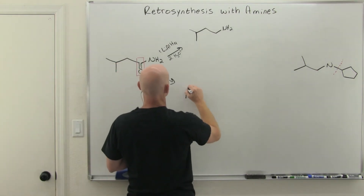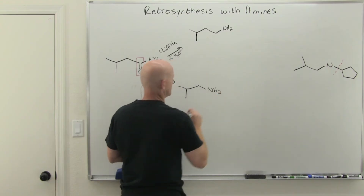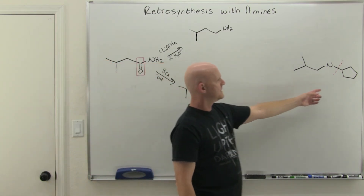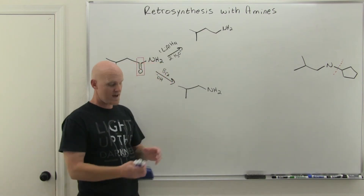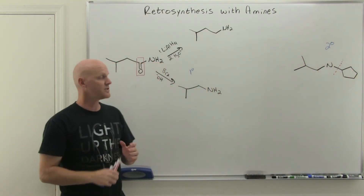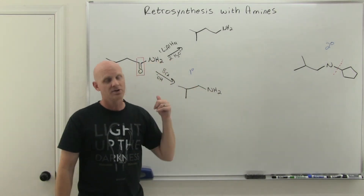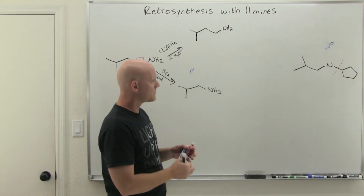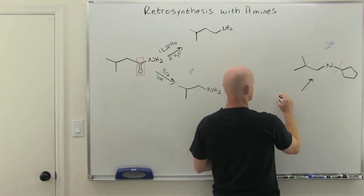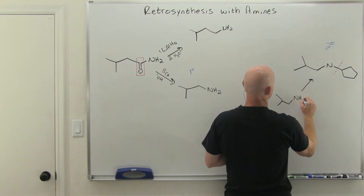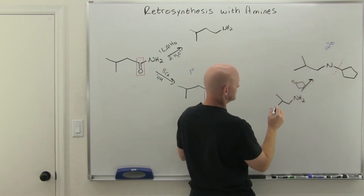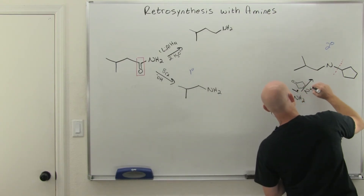After the Hofmann rearrangement, the carbonyl is completely removed and we end up with a primary amine. Now we need to bond that amine to the other carbon group to give a secondary amine — again the bell should go off: reductive amination. Working backwards, if I'm doing reductive amination to form that bond, I want this primary amine reacting with the corresponding ketone in the presence of sodium cyanoborohydride.